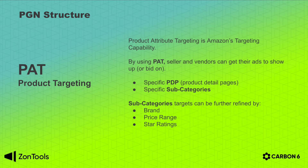With the PAT we can also target specific subcategories for broader reach of ads. Those subcategories can be further refined, filtered, or segmented by brands, price range, and star rating — and that's why at the beginning when you create a PGN we need to know your product price and your star rating, because we will use the data to create a very precise segmentation of all the targets. PAT can only be used on the ad group level — you cannot have a PAT campaign but you can have a PAT ad group.